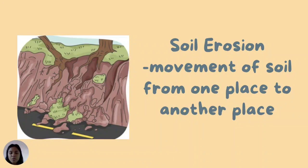Soil erosion can destroy roads and bridges. Roads become rugged and travel will be difficult and long. Repair of roads will cost the government a lot of money. Erosion affects the land and can change its shape and size. Human activities such as deforestation, illegal logging, and quarrying also increase the effects of soil erosion in the environment.